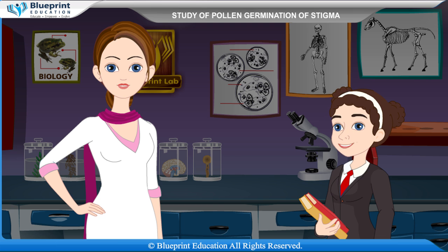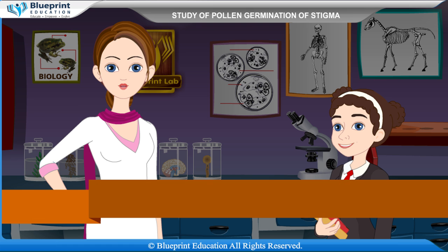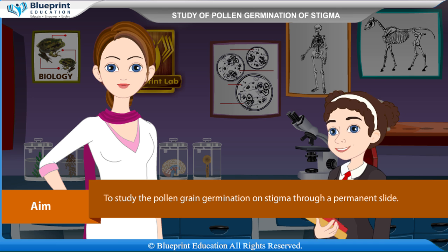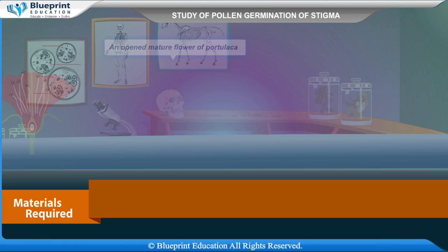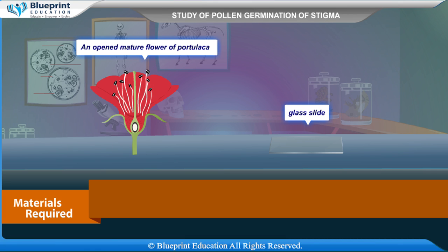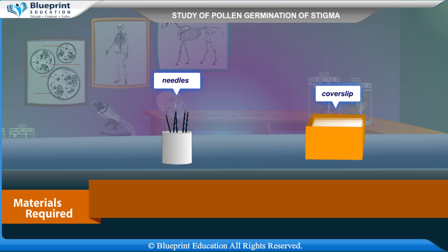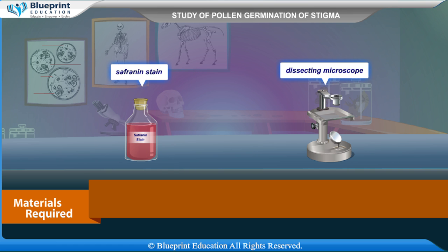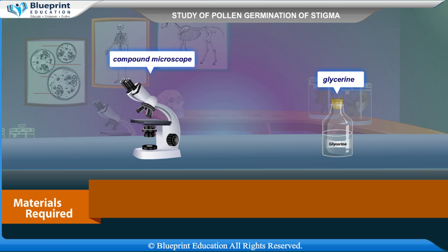Let's do an experiment to study the pollen grain germination on stigma through a permanent slide. Our aim is to study the pollen grain germination on stigma through a permanent slide. Materials required are an opened mature flower of Portulaca, glass slide, needles, coverslip, safranin stain, dissecting microscope, compound microscope, and glycerine.